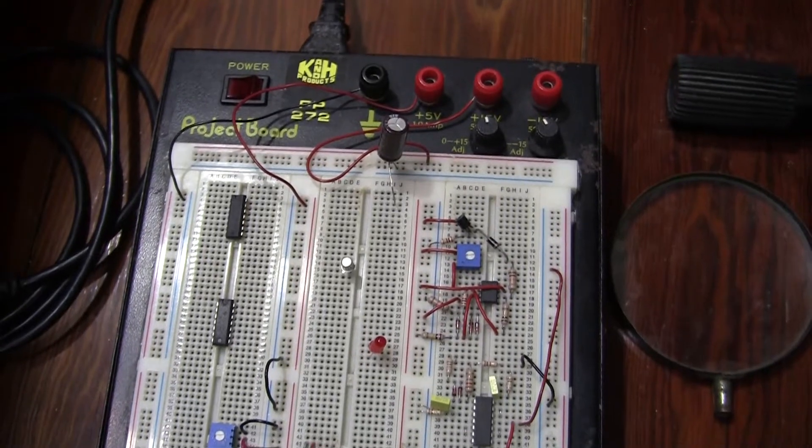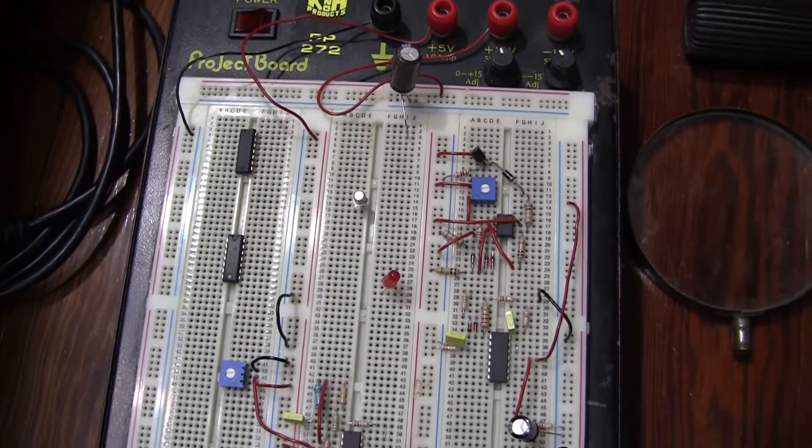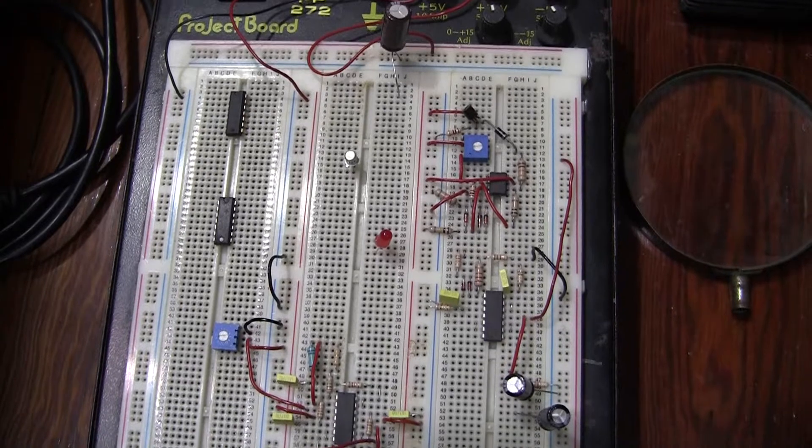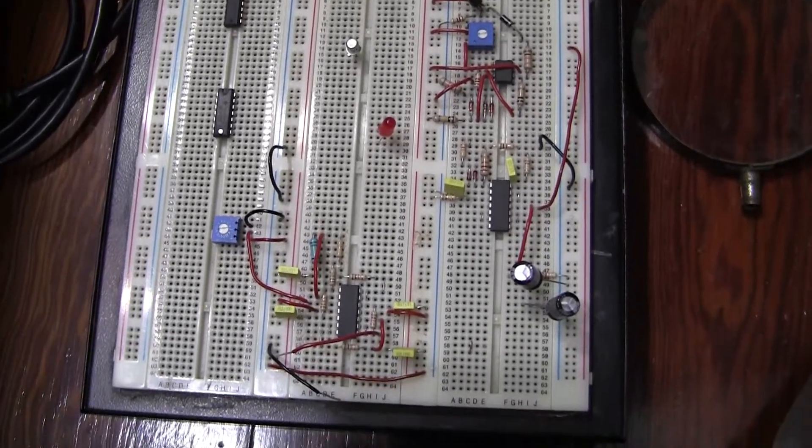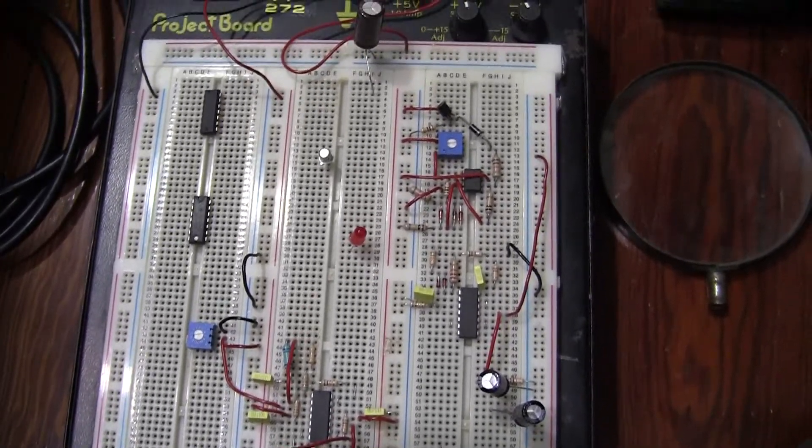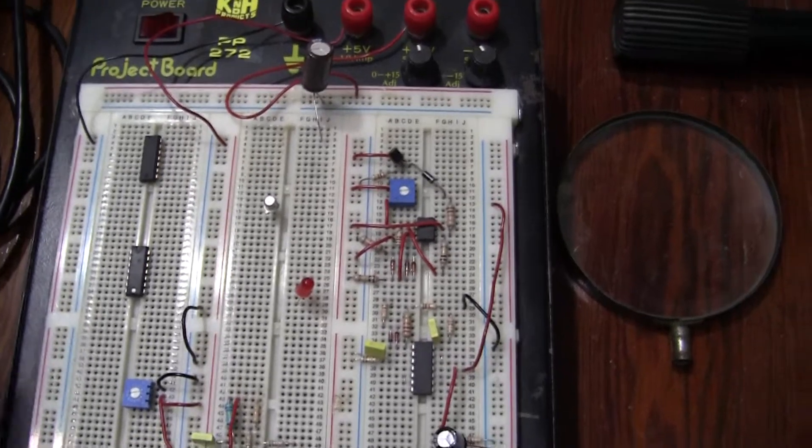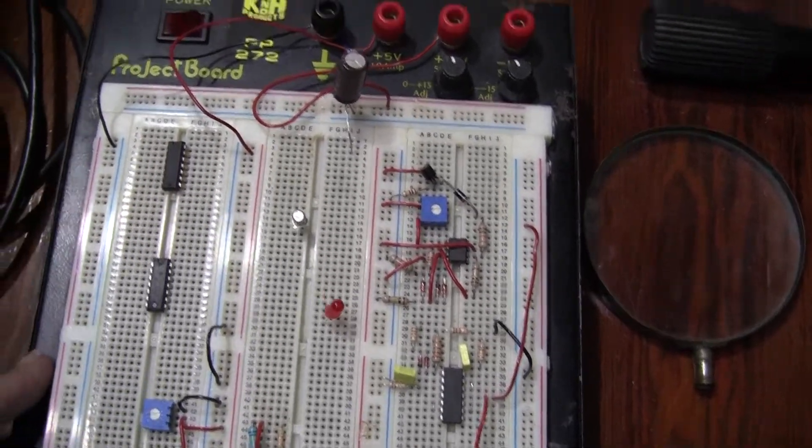Okay we can make this video one way or the other. Don't worry to pay any mind to all these other circuits here that's on the breadboard. We're just wiring the circuit up here on the left where you see the two ICs.